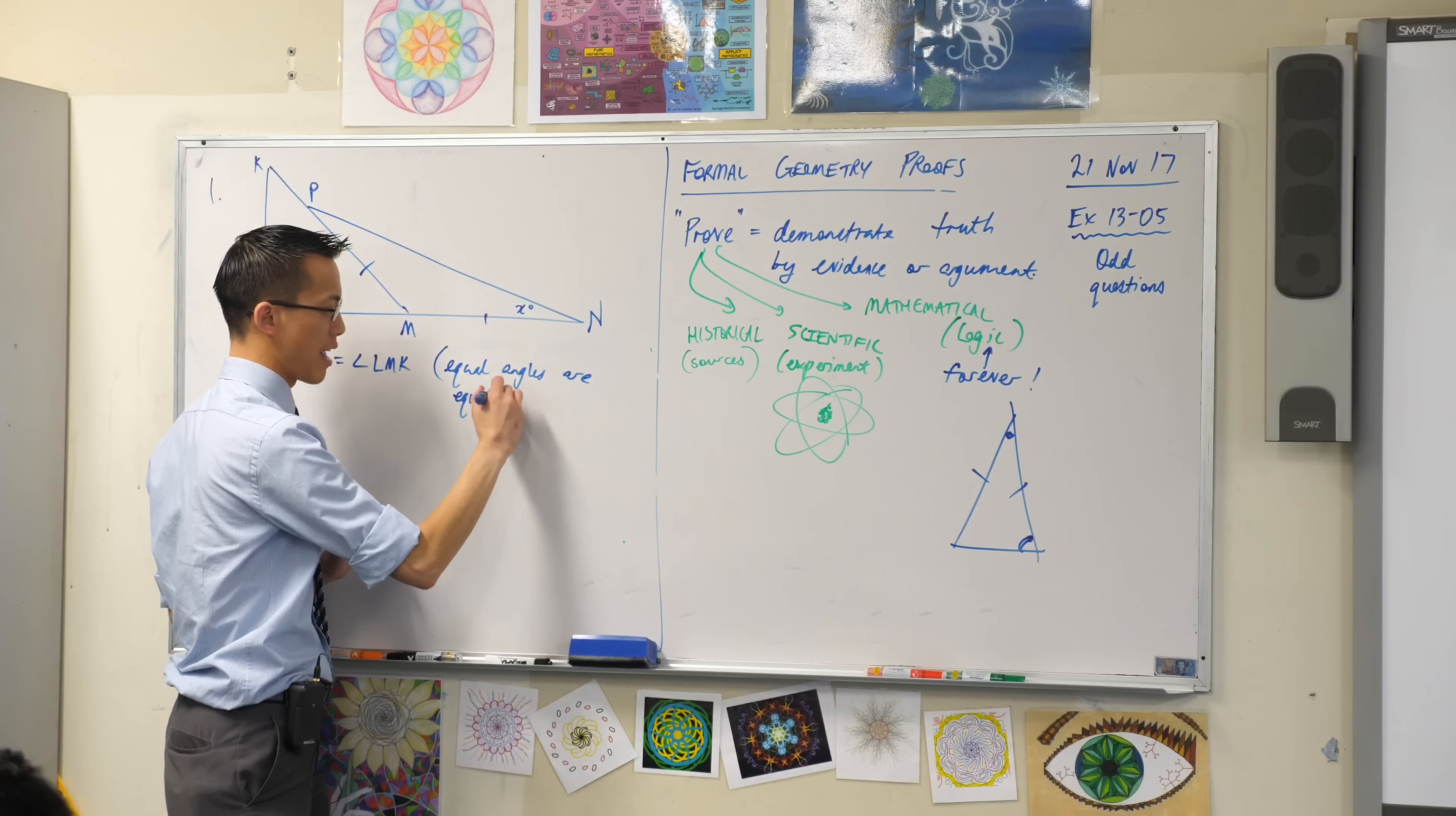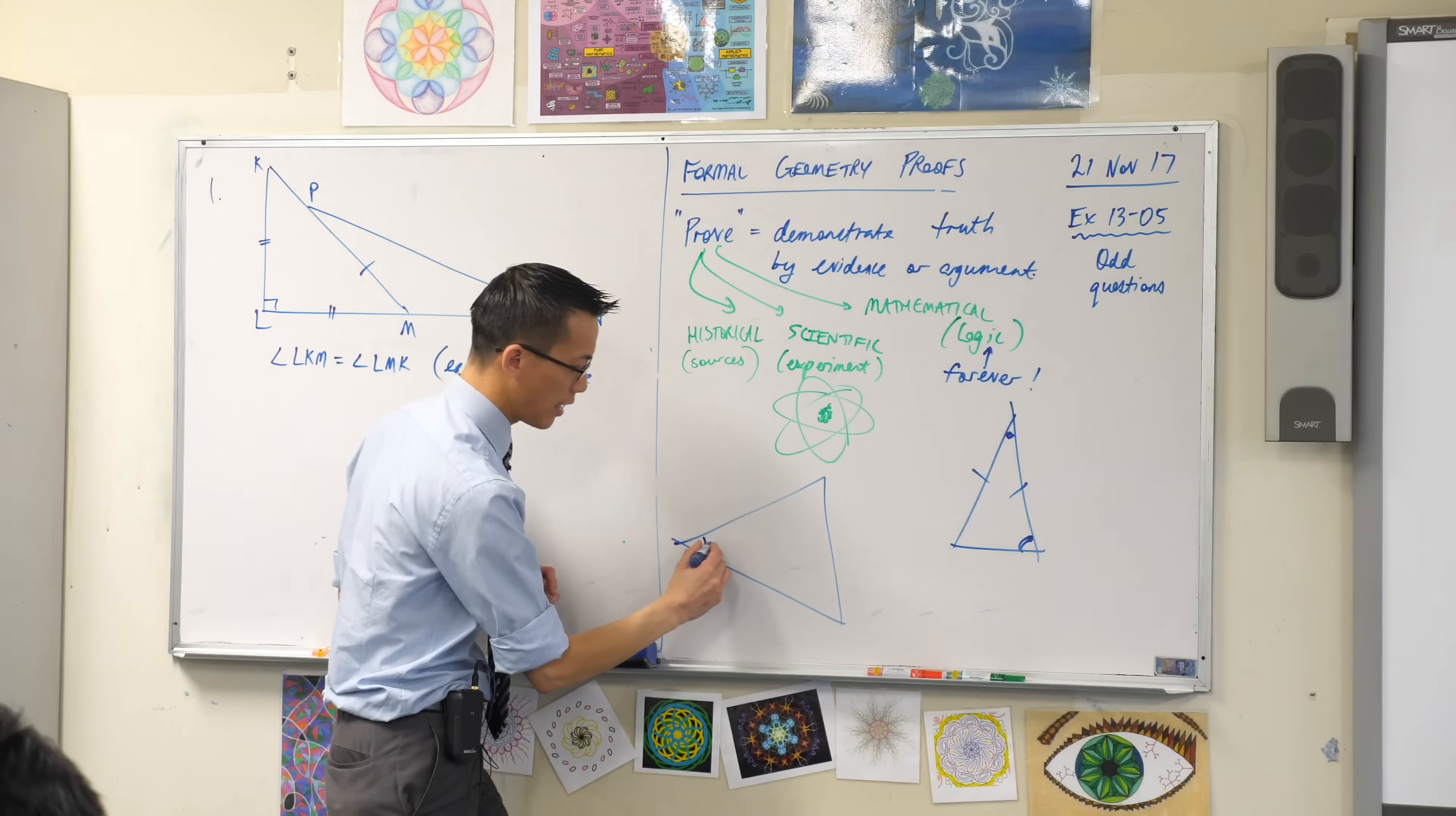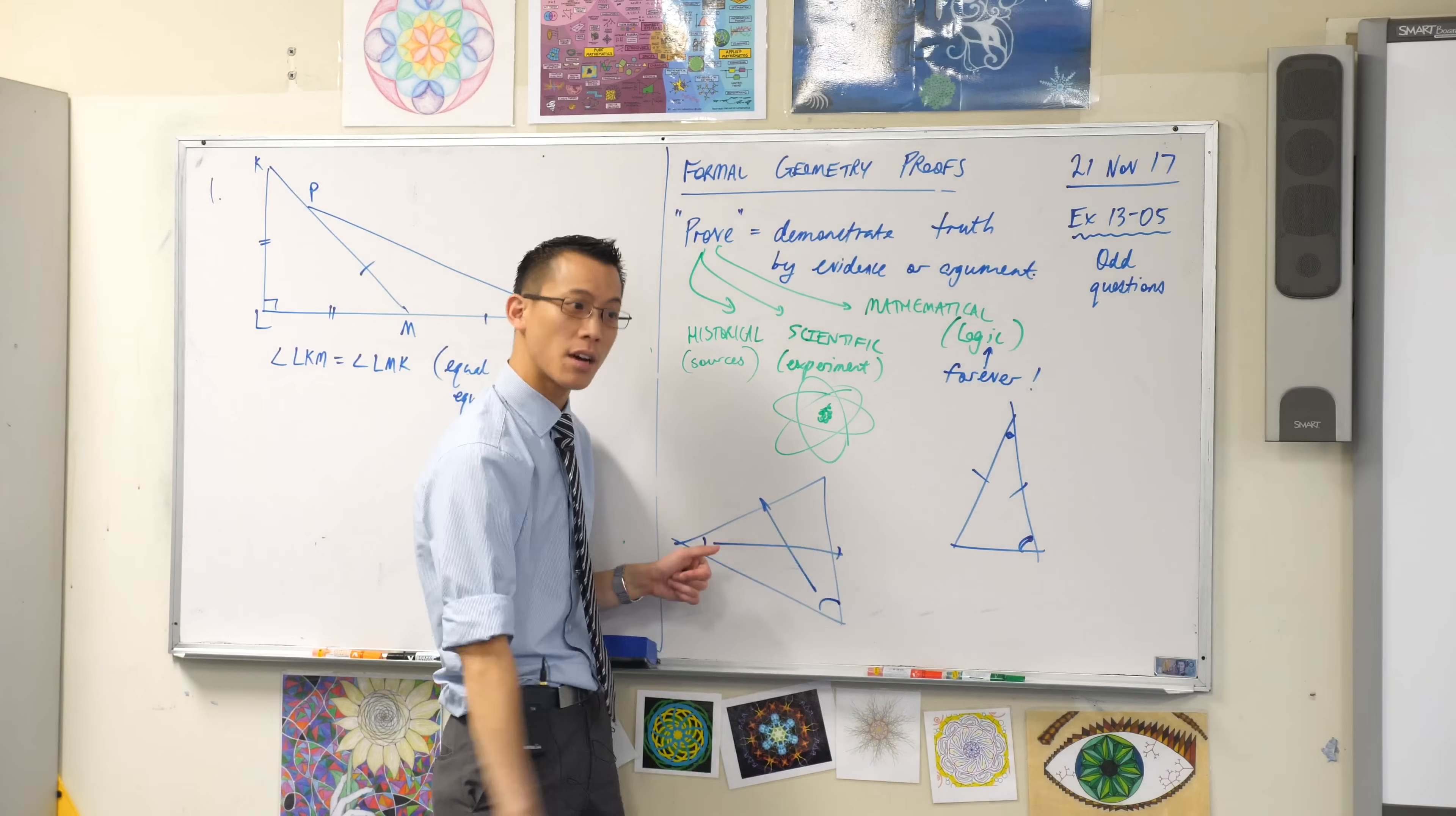Do you remember in the sine rule, how when we draw the triangle, you get an angle over here and it's opposite, an angle over here and it's opposite. Well, if the two angles are equal, the sides end up equal as well.